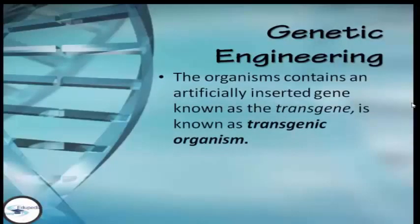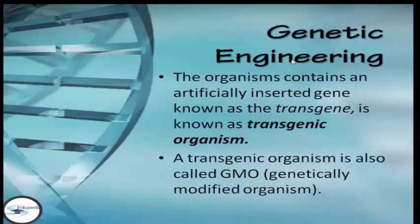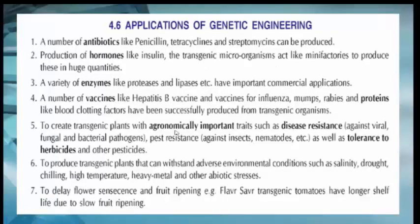In genetic engineering, organisms contain an artificially inserted gene known as a transgene, and are known as transgenic organisms. A transgenic organism is also called a GMO, or genetically modified organism. As you can see in the image, the applications of genetic engineering include production of antibiotics, hormones, a variety of enzymes, and vaccines like hepatitis vaccine. It is also used to create transgenic plants with agronomically important traits such as disease resistance and tolerance to herbicides and other pesticides, as well as plants that can withstand adverse environmental conditions such as salinity, drought, chilling, high temperature, heavy metals, and other abiotic stresses, and also to delay flower and fruit ripening.